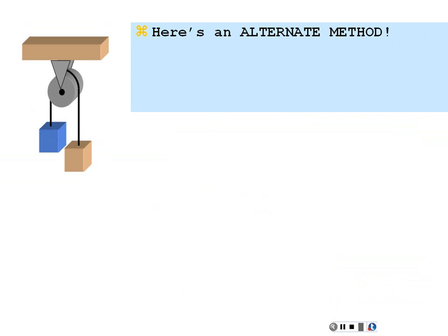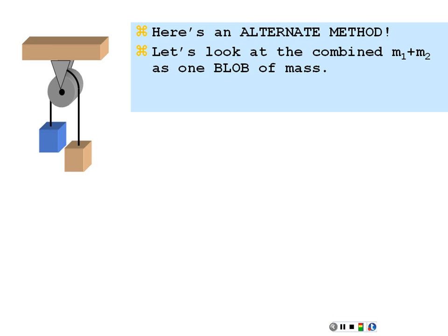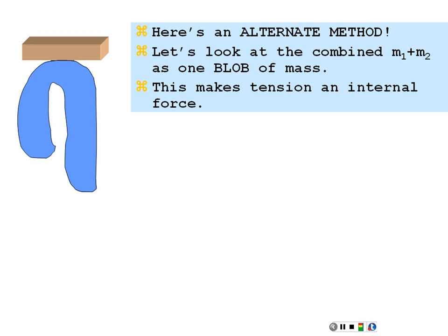Here's an alternate method for approaching this problem. Let's look at the combined mass 1 plus mass 2 as one blob of mass. We treat this whole system as one mass moving under one acceleration in one direction — kind of a curved direction, but moving as one mass. I want to look at the external forces acting on this one mass and set up Newton's Second Law looking at the external forces in the direction of motion.